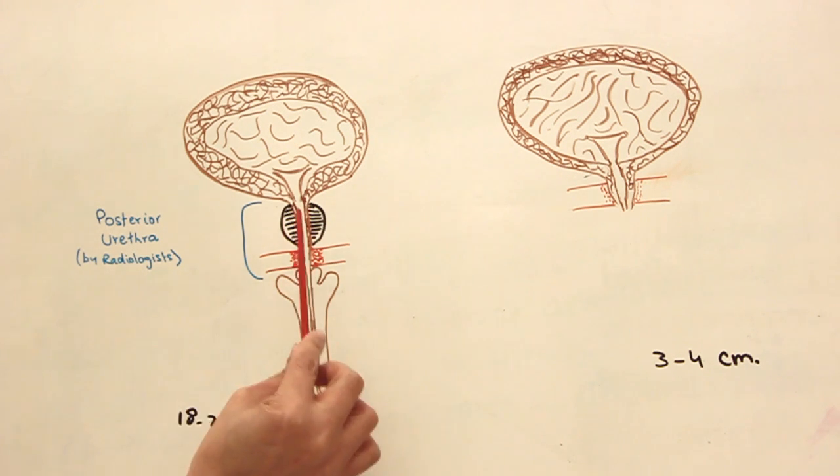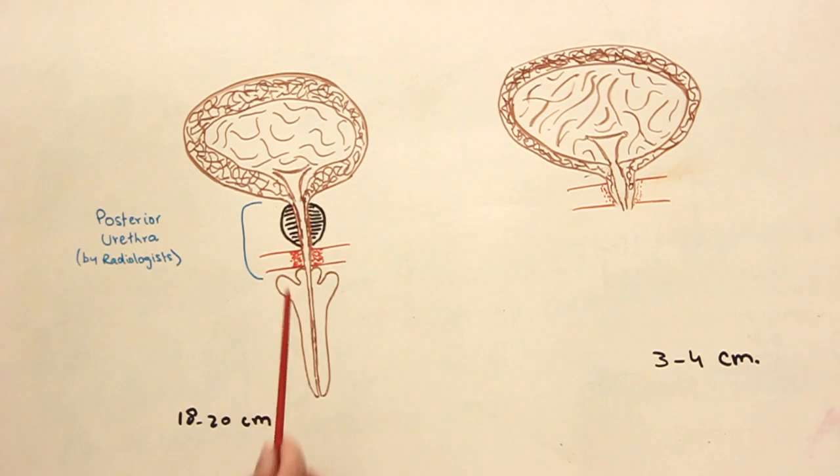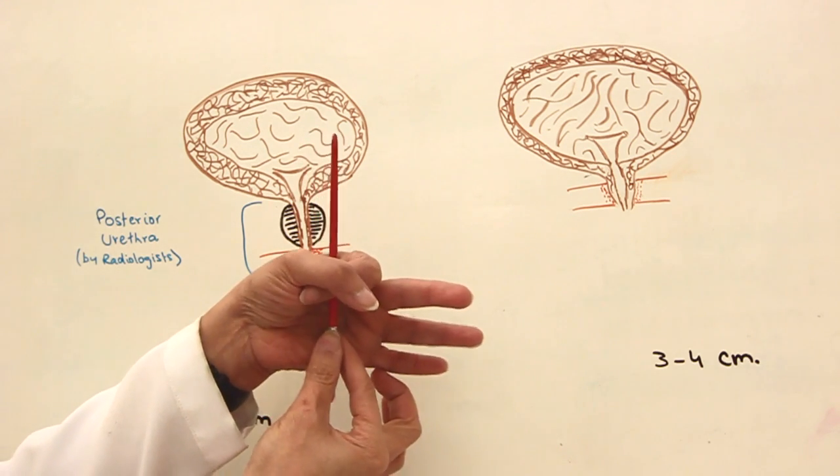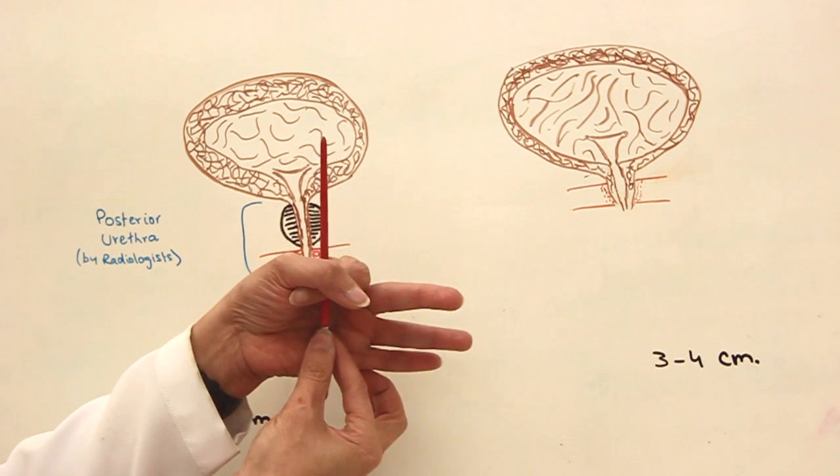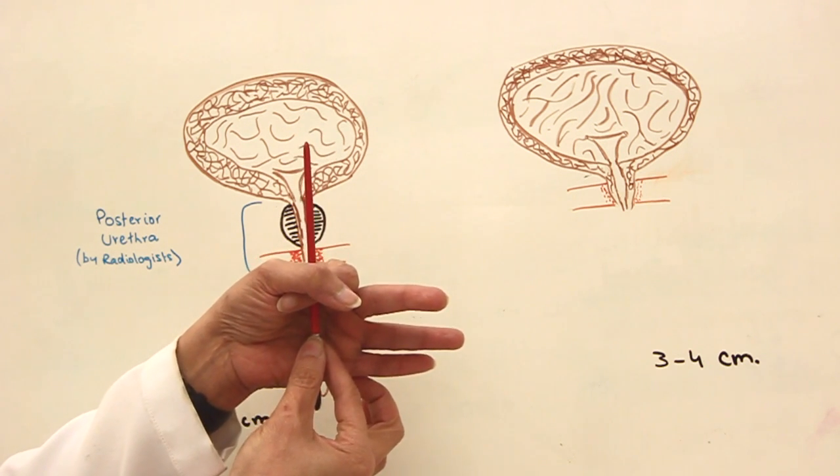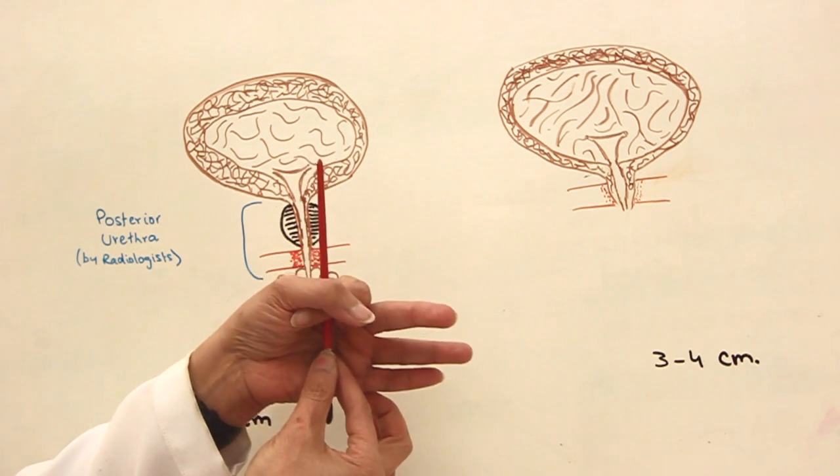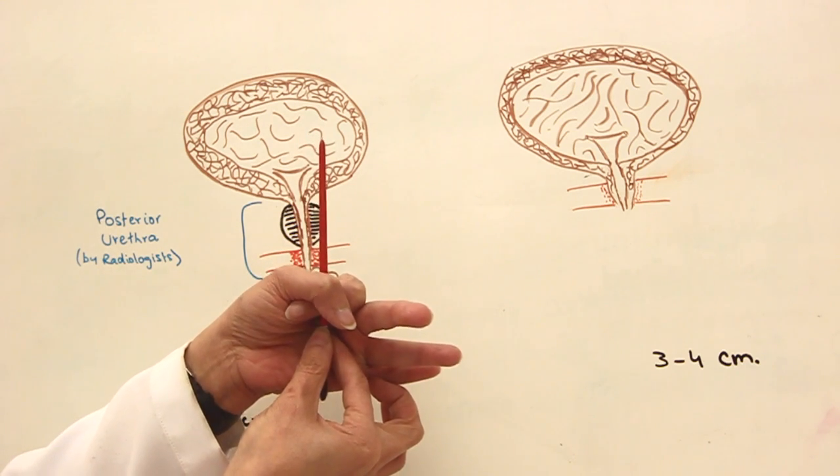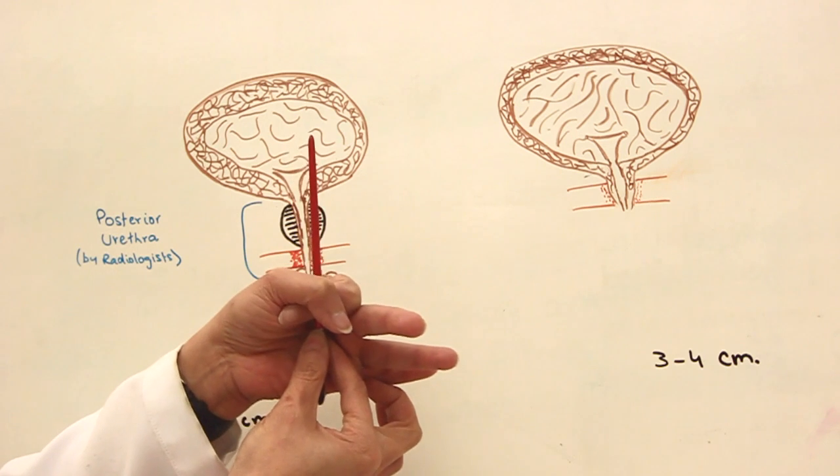In case of males, the neck of the bladder has been surrounded by a collar-like gland. It's actually a chestnut-shaped gland which is surrounding the neck of the bladder like a collar. That's known as the prostate gland.